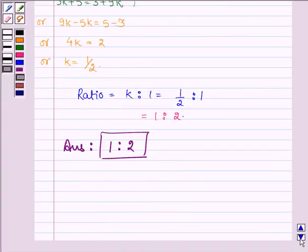So the point Q divides the line PR in the ratio 1 is to 2 internally. So this completes the session. Hope you have understood it. Take care and have a good day.